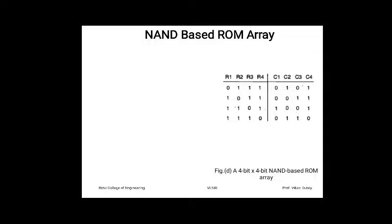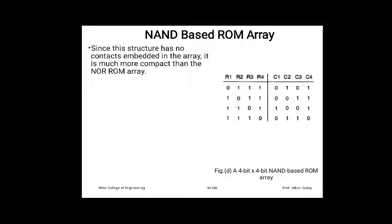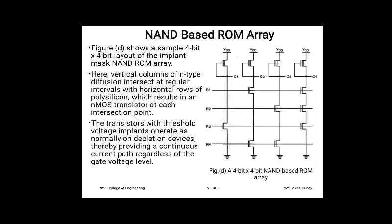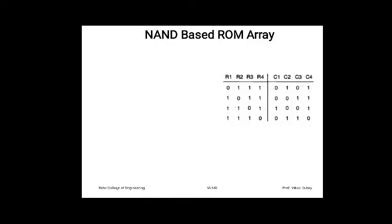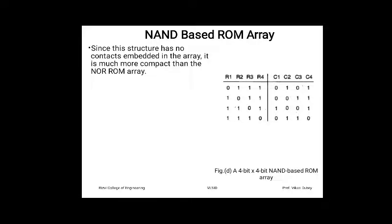In the NAND based ROM array operation table: when R1 equals 0, the transistors connected to C2 and C4 are not driven off, so C1 and C3 are pulled to ground while C2 and C4 are high. When R2 equals 0, transistors at C1 and C2 are turned on, grounding those columns while C3 and C4 remain high. This illustrates the basic operation of the NAND based ROM array.